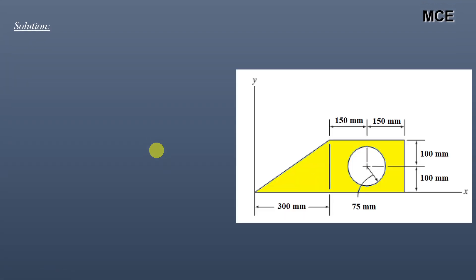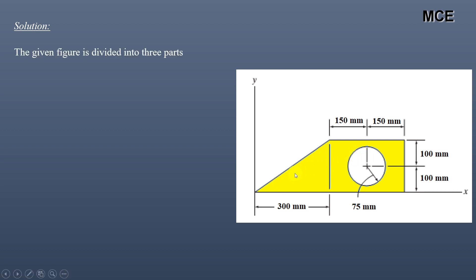Now let us move to our question. We have to find the moment of inertia of this composite shape about the x-axis. To find it, we will divide this composite shape into three parts: the first one will be the rectangle, the second one will be the circle, and the third one will be the triangle.